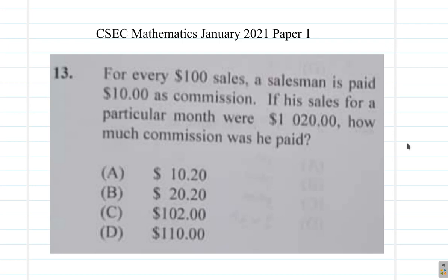Question 13. For every $100 sales, a salesman is paid $10 as commission. If his sales for a particular month were $1,020, how much commission was he paid? You read it out and tell me. Alright, let's see how that goes.